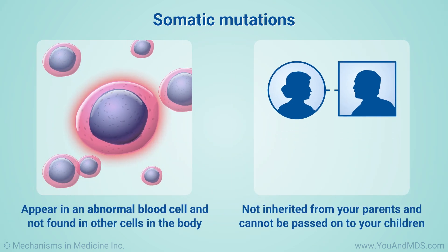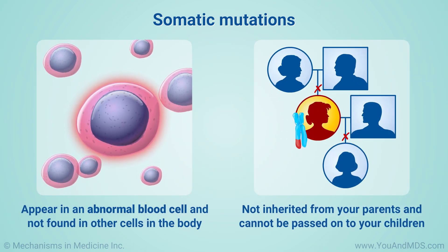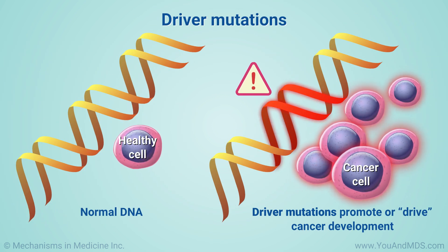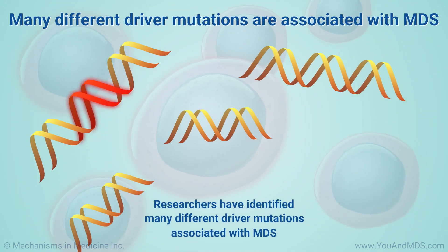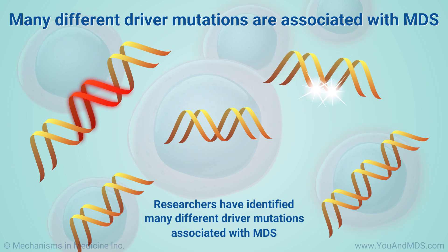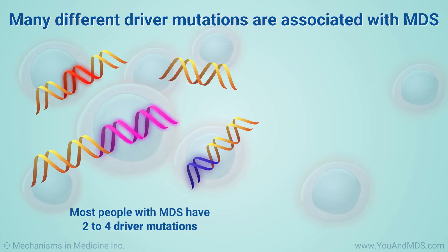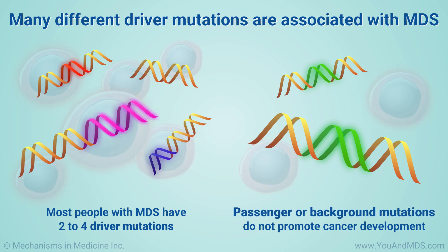You do not inherit somatic mutations from your parents, and you cannot pass them on to your children. Some mutations promote or drive cancer development. Experts call these driver mutations. Researchers have identified many different driver mutations associated with MDS. Most people with MDS have two to four of these, plus many others that do not promote cancer development. These others are called passenger or background mutations.